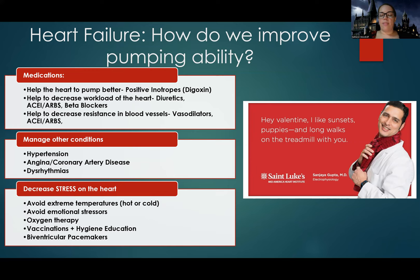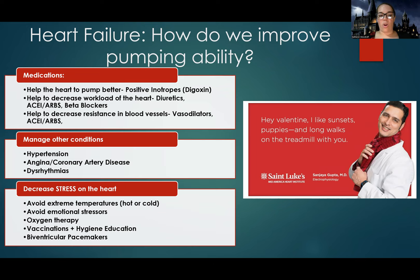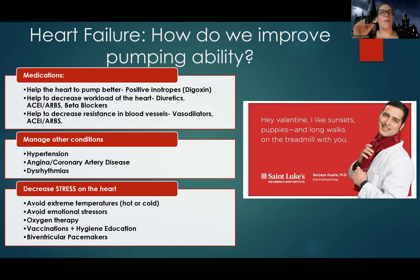We also want to manage other conditions that stress the heart. Hypertension: we cannot afford vasoconstriction, we need blood vessels relaxed. High plaque levels and blockages: the heart doesn't have the bandwidth to manage blockages and heart attacks, so we manage those with stents or statin medications. Dysrhythmias decrease cardiac output and stress the heart, requiring more oxygen. We also want to avoid temperature extremes — too hot or too cold is too hard on the heart — and manage emotional stress. Patients may need therapy or lifestyle alterations to reduce stress.